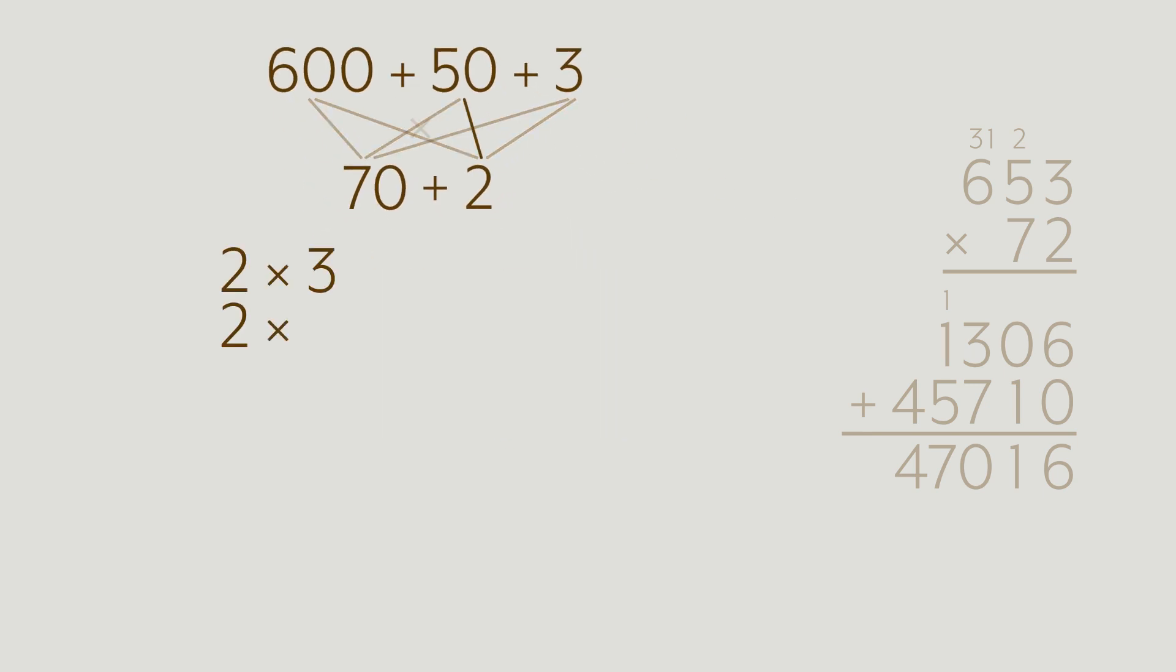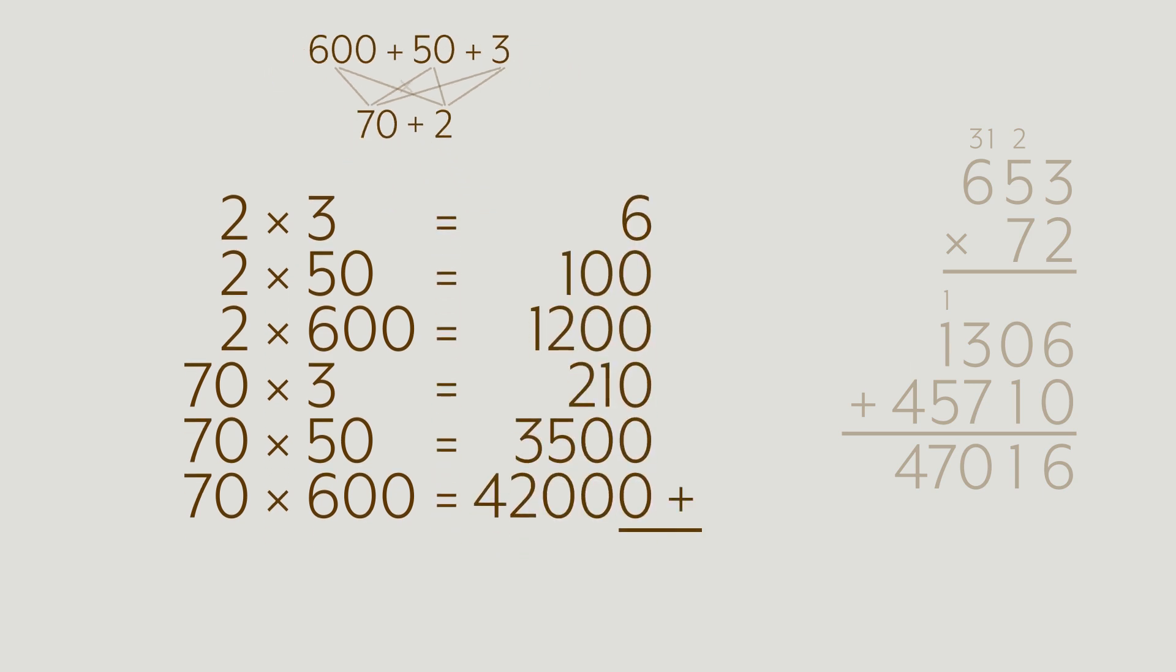In fact, you are really just doing six different multiplications here. 2 times 3, 2 times 50, 2 times 600, 70 times 3, 70 times 50, and 70 times 600. Now what we've done is we've taken this multiplication and chopped it up into little pieces. And when we add all those pieces up, you'll notice we still get the same answer.